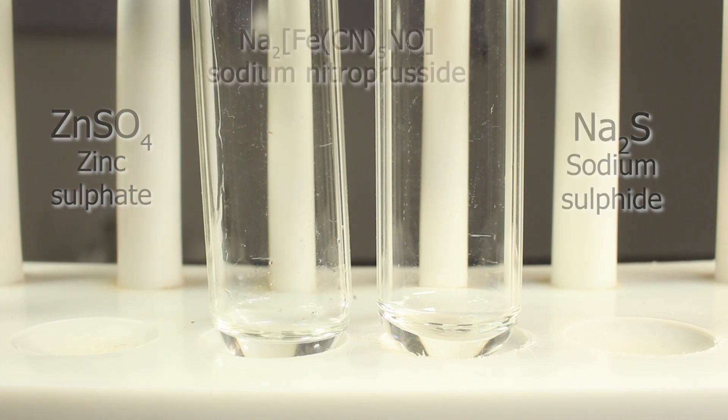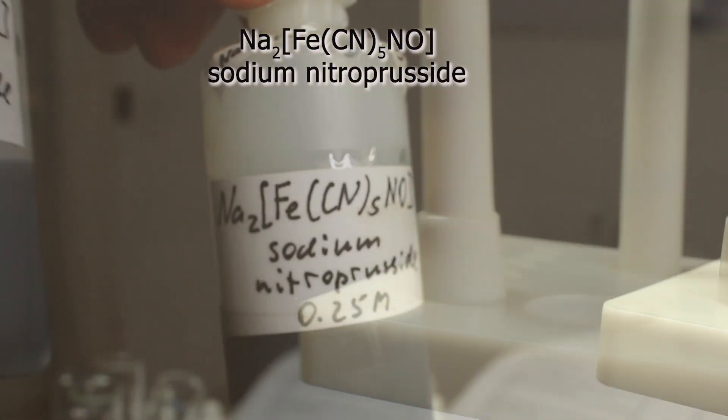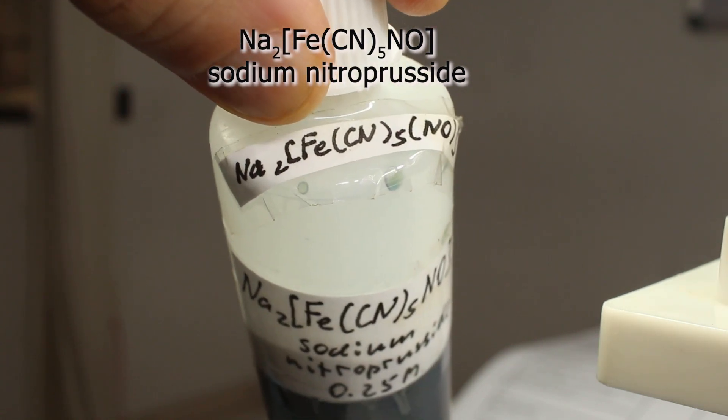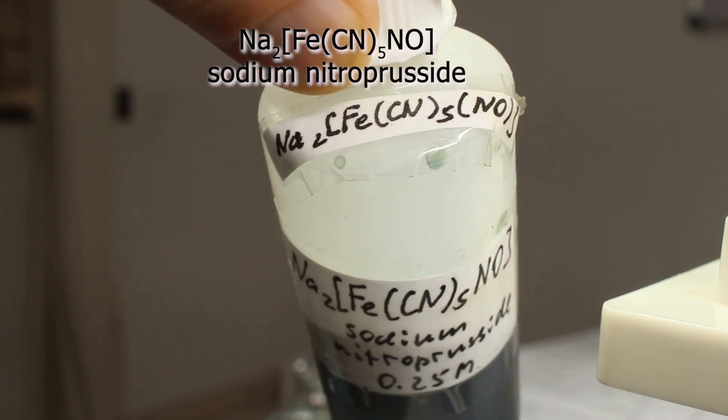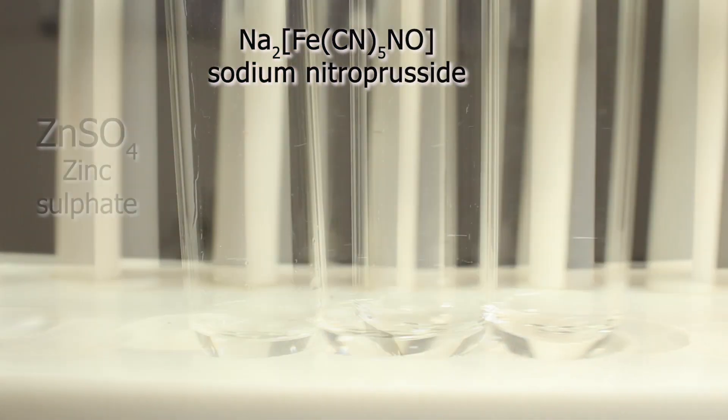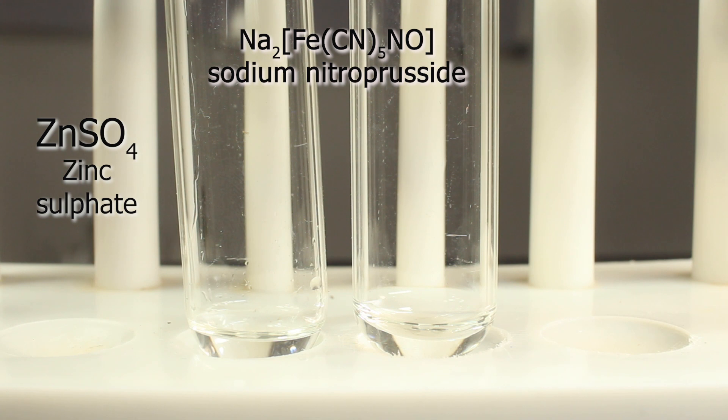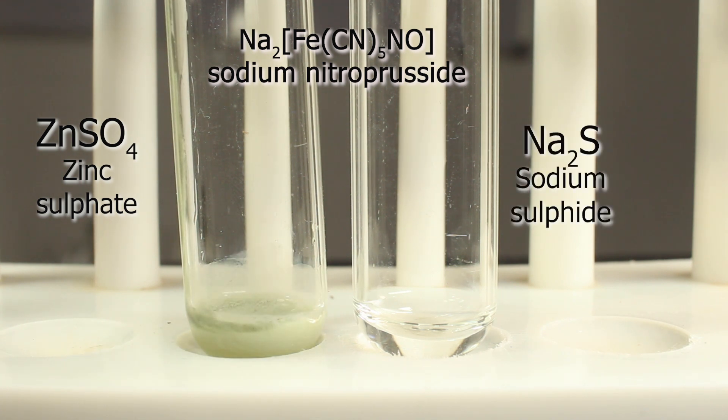This is a complex of iron-3 with five cyanide ions and one nitrogen monoxide molecule. Nitrogen monoxide can accept sulfide ion, changing the ligand and therefore changing color. You see here with sulfate nothing spectacular happens.